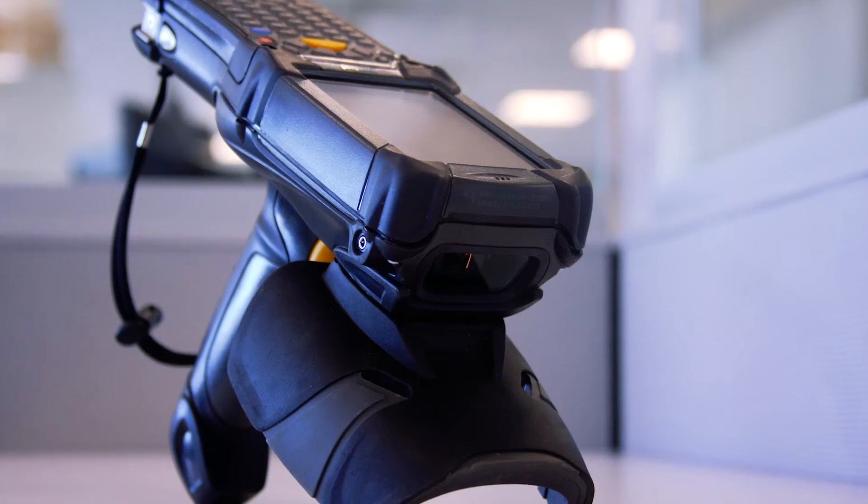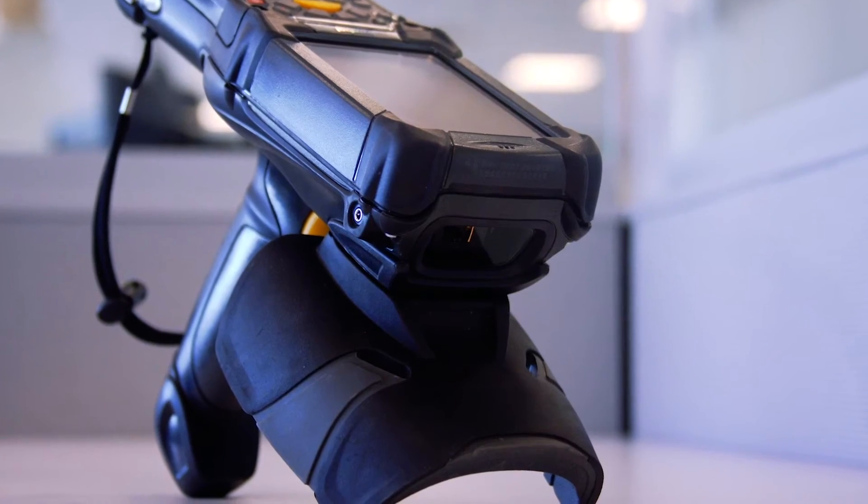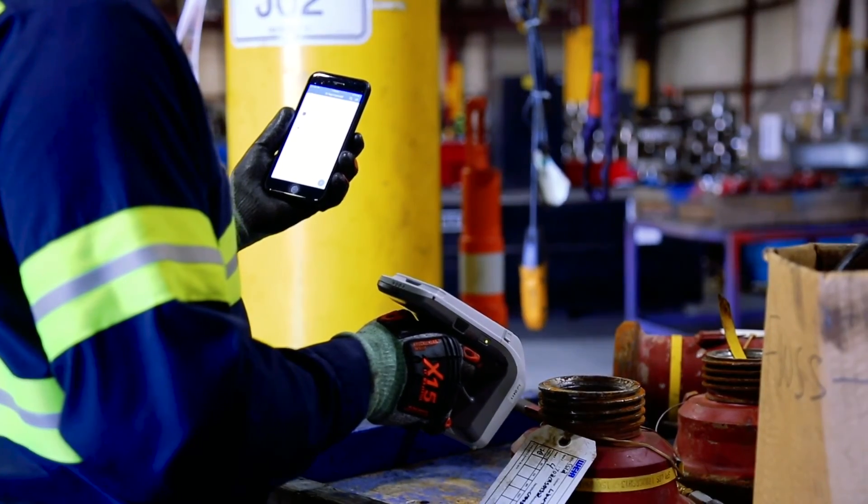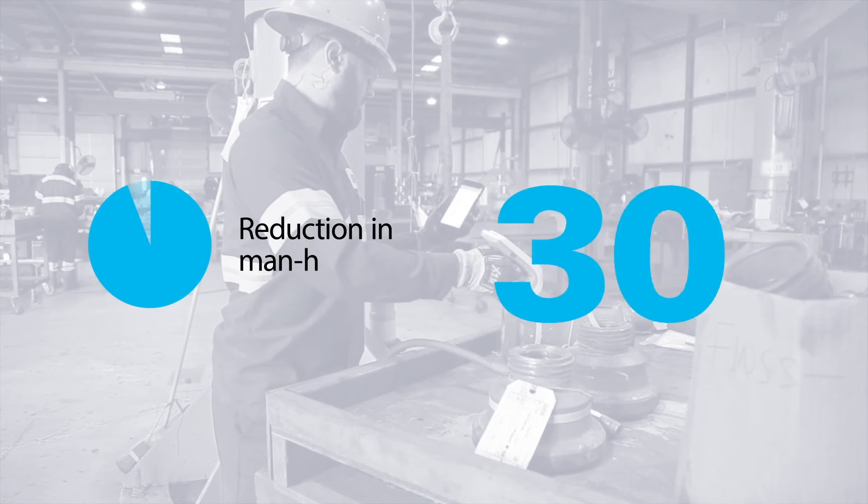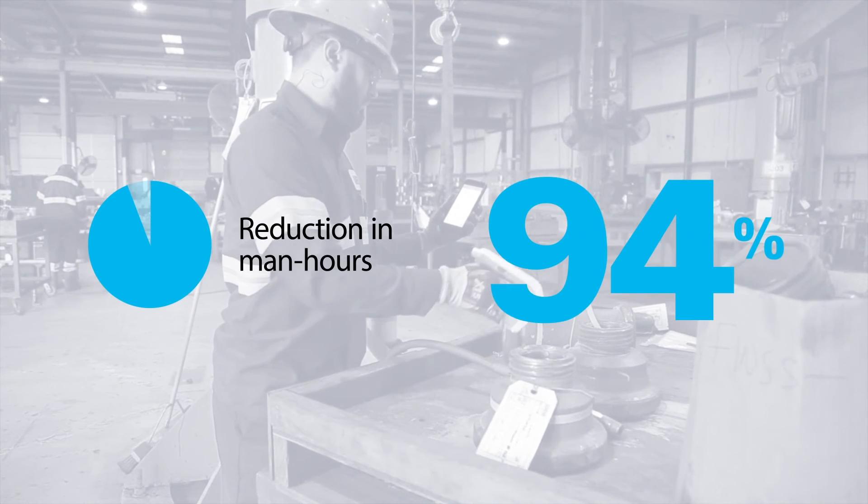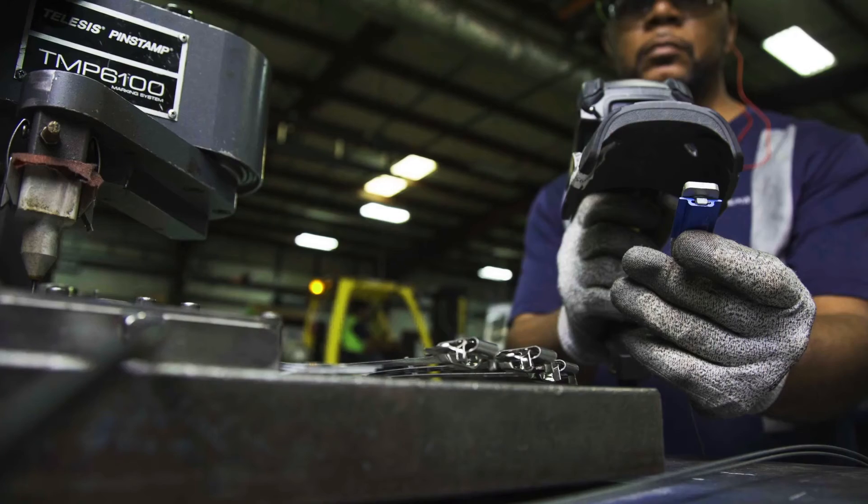After implementing SPM RFID technology with the app database, logging by serial number now takes one worker less than an hour. That's a 94% reduction in man hours and a complete elimination of human error.